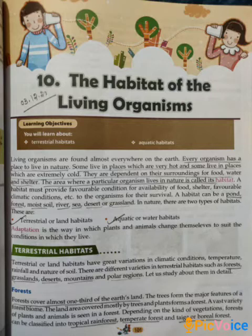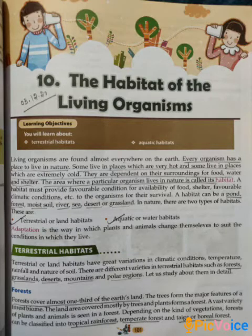Now let's come to terrestrial habitats. Terrestrial or land habitats have great variations in climatic conditions, temperature, rainfall and nature of soil. There are different varieties in terrestrial habitats such as forest, grassland, desert, mountains and polar regions. So let us study about them in detail.